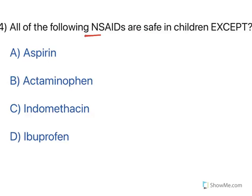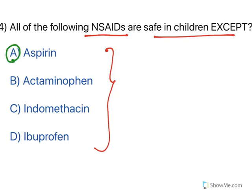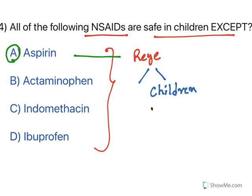All of the following NSAIDs are safe in children except — all these are NSAIDs widely used to treat pain, fever, and inflammation, but the exception is aspirin. The reason is there is a chance for aspirin to cause a syndrome known as Reye's syndrome. Reye's syndrome usually occurs in children who are recovering from viral infections like influenza.